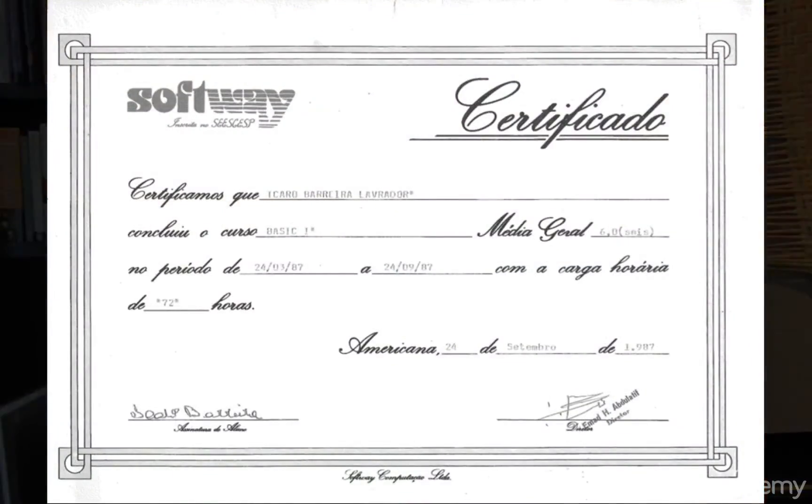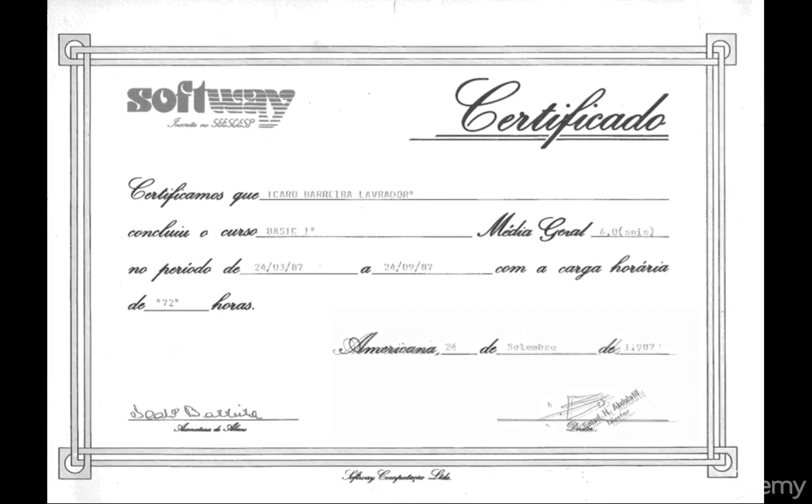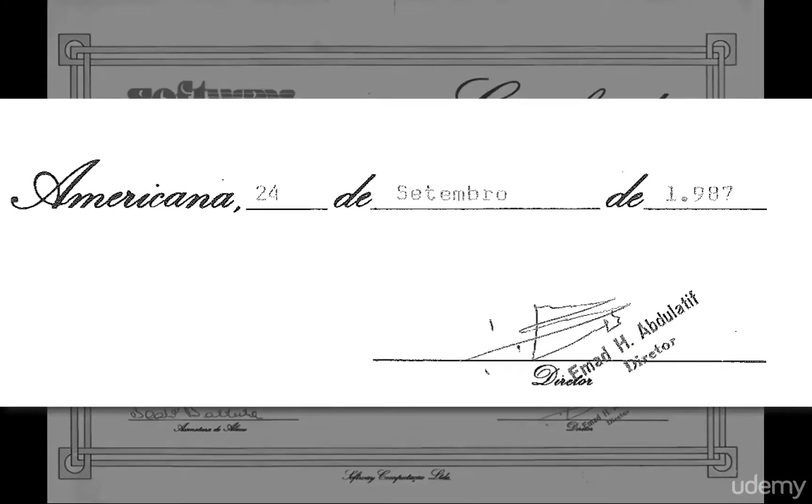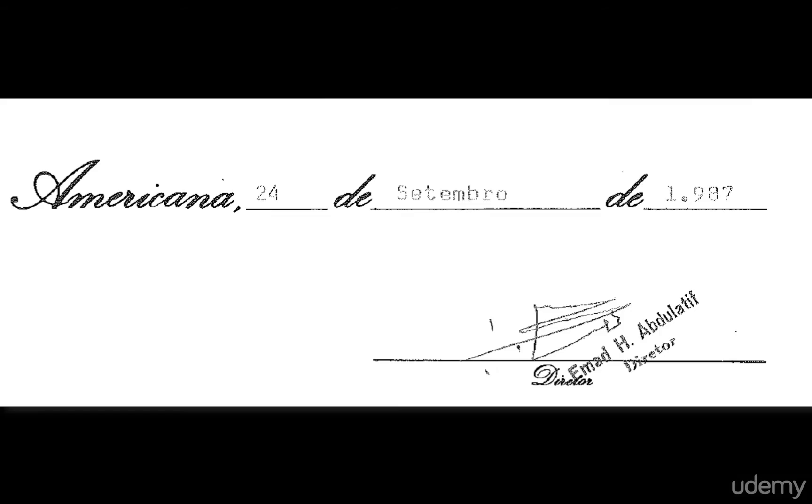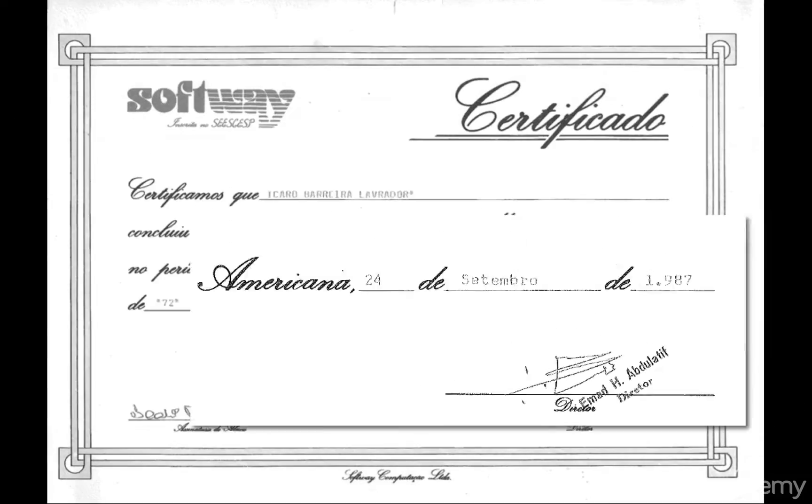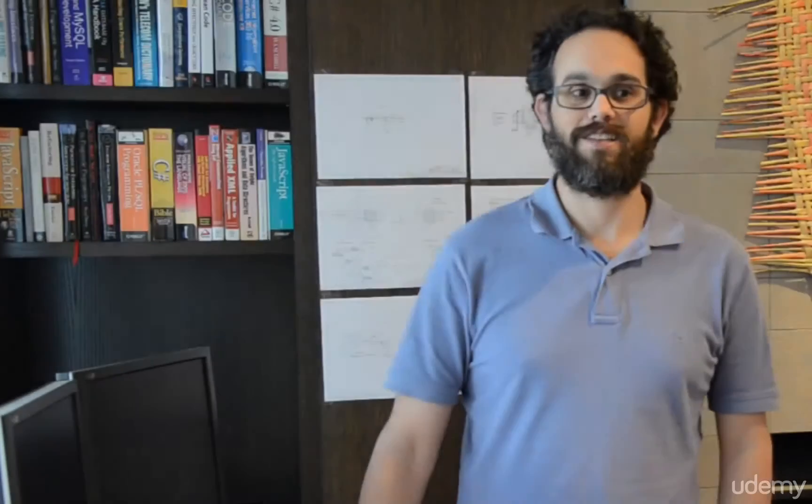I got my first certificate in computer development when I was 10 years old. I was in a class full of adults and I was the only kid around. I would spend my holidays at school coding and saving my codes into tapes. When I wasn't at school, I would be at my dad's office where we had a computer, programming as well.